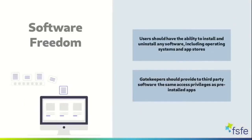Blocking end users' freedoms to install, run, and uninstall software on their devices is a central source of gatekeeper control. Although gatekeepers may argue that installing third-party software could be potentially harmful to users due to security or data integrity and privacy concerns, in fact commercial interests are the main driver to lock users in. Regaining control over devices requires safeguarding software freedom. We defend that users should have the ability to install and uninstall any software, including operating systems and app stores. Besides, gatekeepers should provide third-party software the same access privileges as pre-installed ones. This may sound like common knowledge for the free software community, but is far from being current commercial practice by gatekeepers.